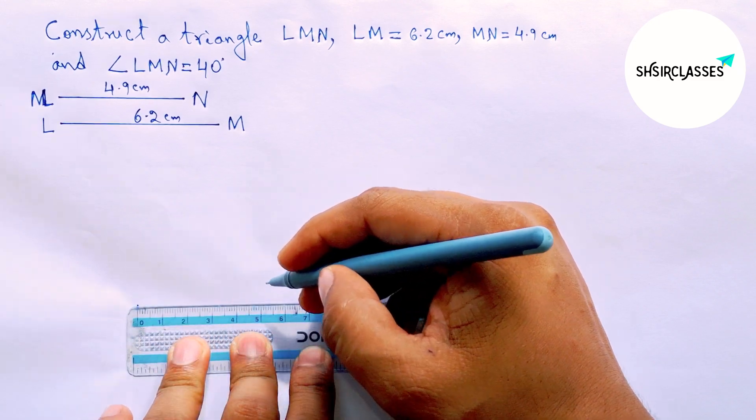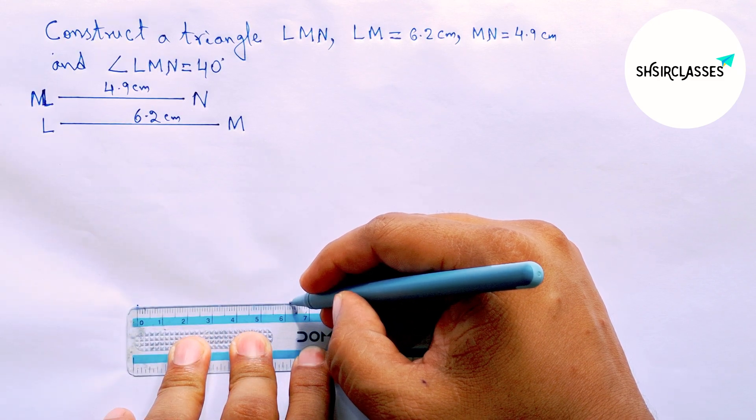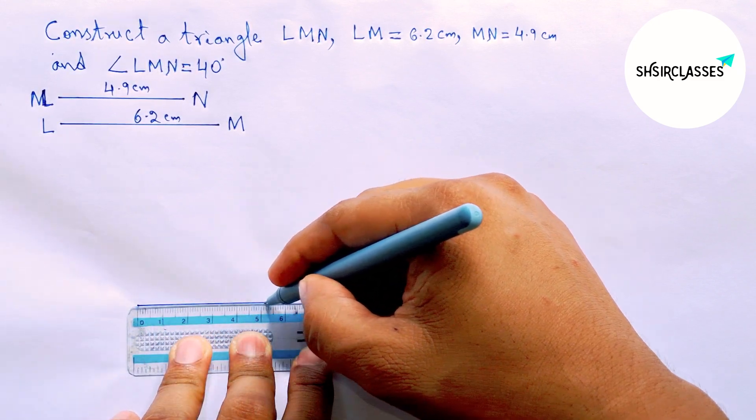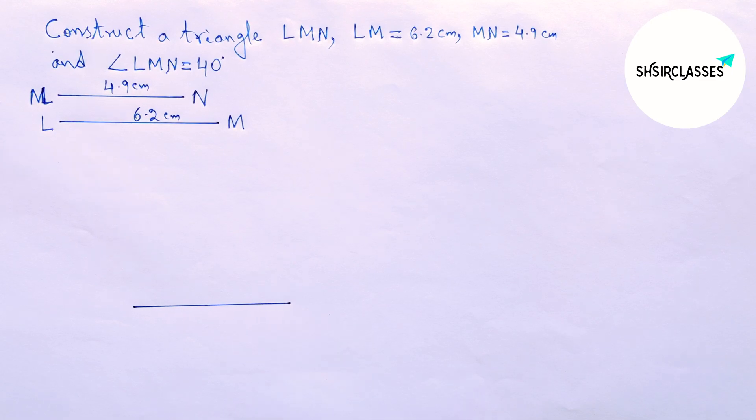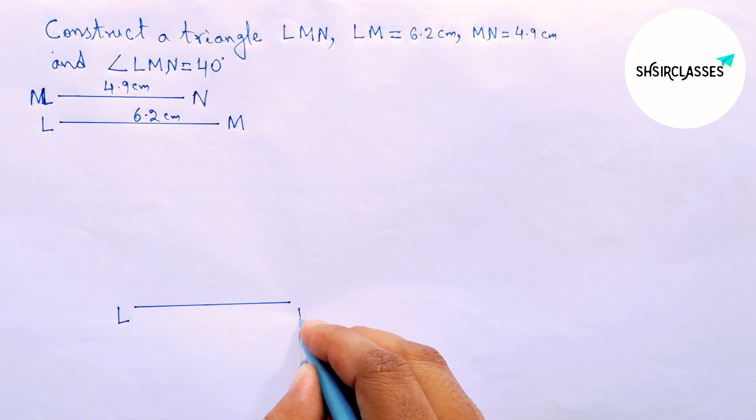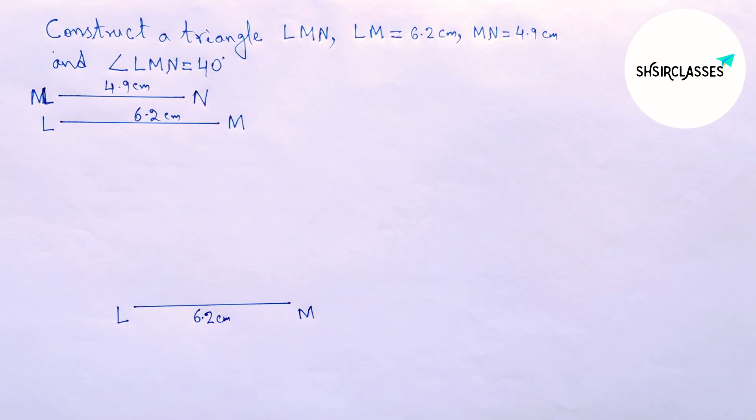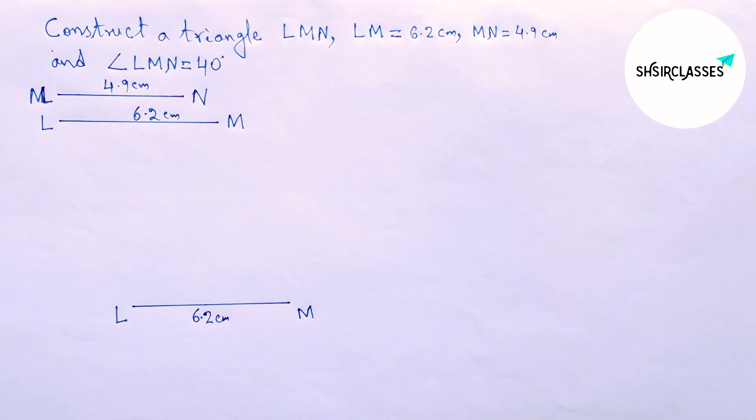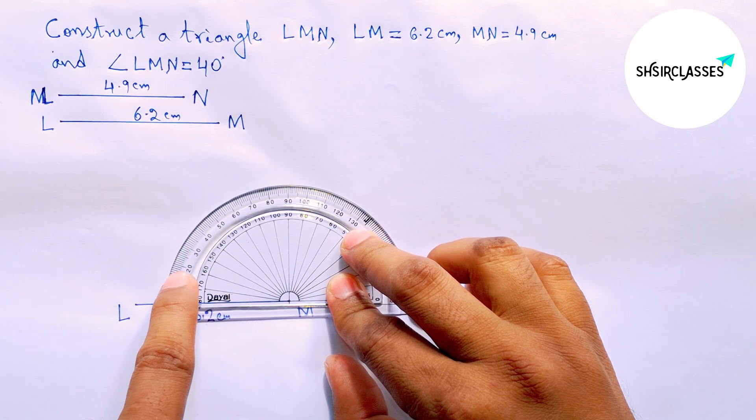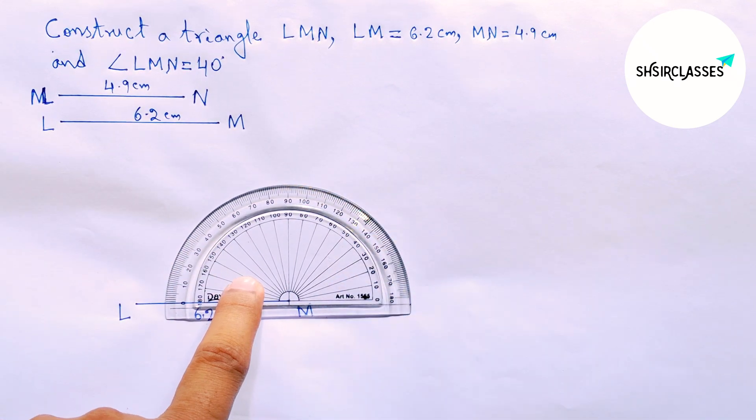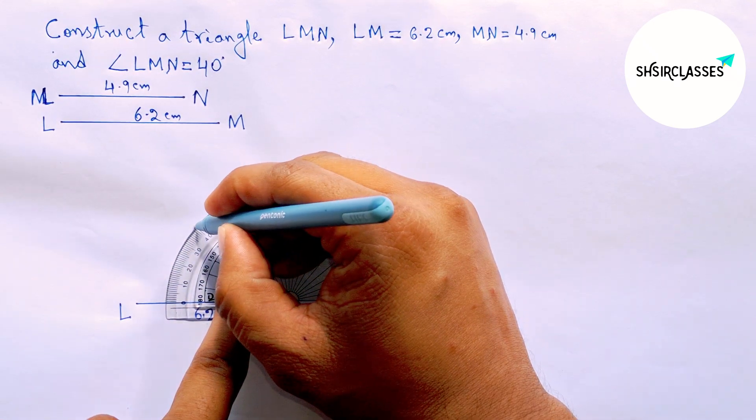Drawing a line segment of length 6.2 centimeters. Labeling this LM - LM equals 6.2 centimeters. Now drawing angle LMN equal to 40 degrees at point M with the help of a protractor. First, counting to 40 degrees.